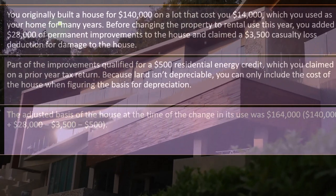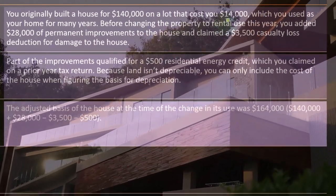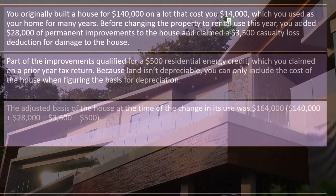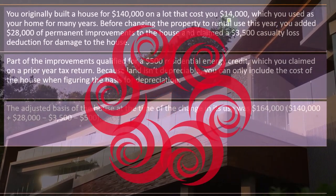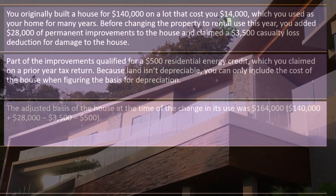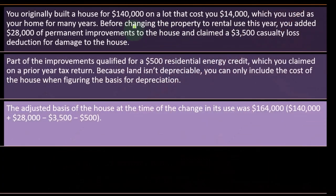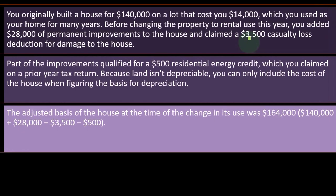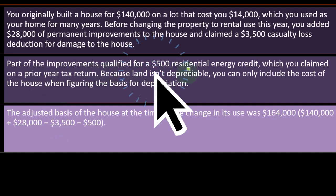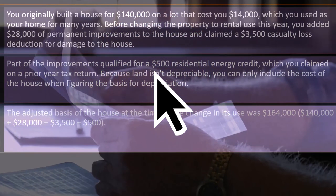So we're talking about the house here: $140,000 — you built the house for $140,000 on a lot that costs $14,000. The land isn't depreciable, so we're talking about the building and we're not adding the $14,000 as a depreciable component. Before changing the property to rental use, you added $28,000, which increased the basis due to permanent improvements. You claimed a $3,500 casualty loss, so because you got a benefit from the casualty loss, we're subtracting that benefit and decreasing the basis. Part of the improvements qualified for a $500 residential energy credit, so we're subtracting out the credit.